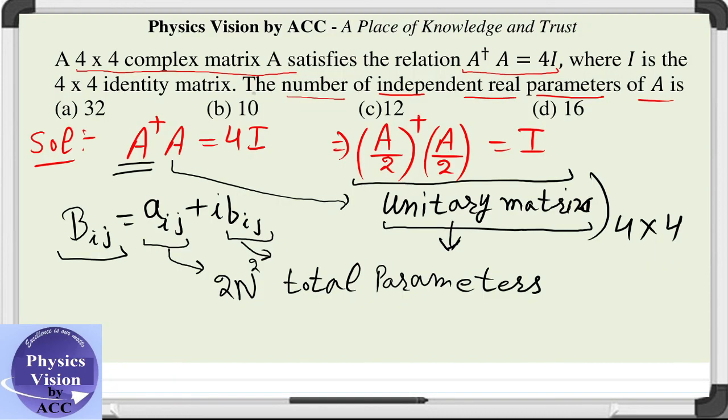Therefore, since n equals 4, we can say that 4 square gives you the correct answer.